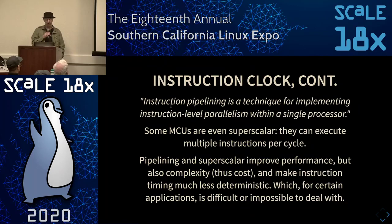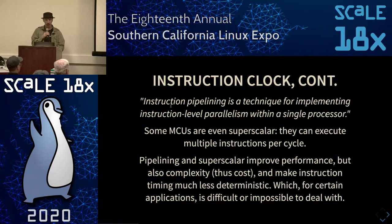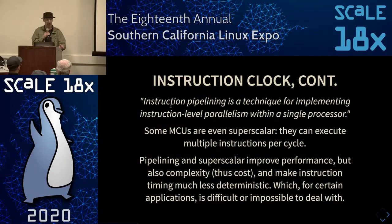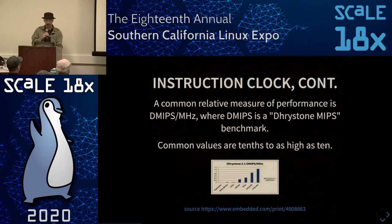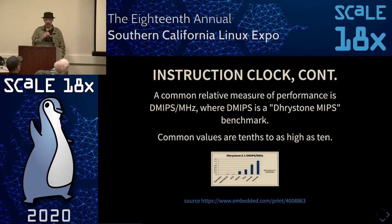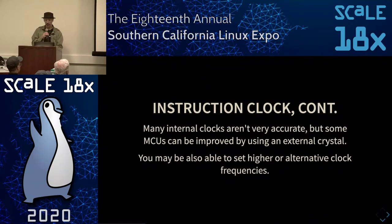Like microprocessors, some microcontrollers are superscalar — they can execute multiple instructions at once, and sometimes even have pipelining. As you get more powerful architectures, your microcontroller becomes less deterministic in its timing, because you don't necessarily know how long each instruction is going to take. This is fundamentally about speed and performance.